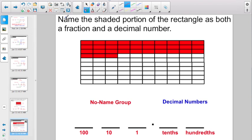How about this one? We got to name the shaded portion of the rectangle as both a fraction and a decimal number. Well, I have one, two, three, four, five, six, seven, eight, nine, ten going up. One, two, three, four, five, six, seven, eight, nine, ten going across. I have ten rows of ten. That sure sounds like a hundred to me, right? So my denominator this time would be a hundred.